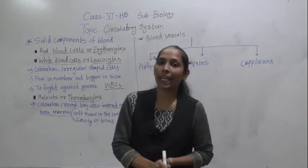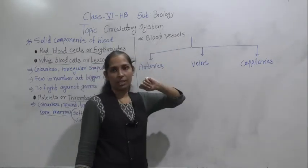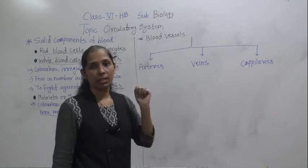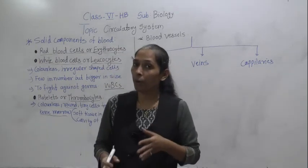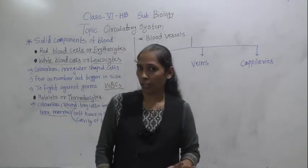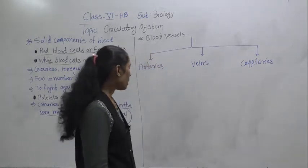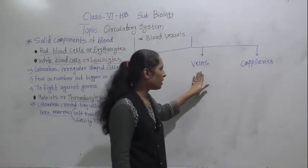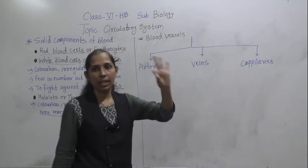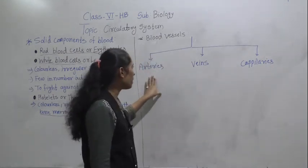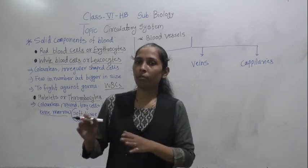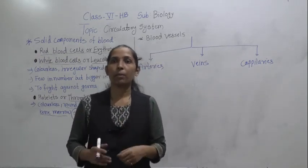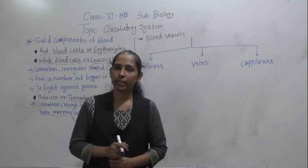Now we will move to the next topic — blood vessels. Blood vessels are tube-like structures which help to transport blood throughout the body. There are three types of blood vessels: arteries, veins, and capillaries. We will discuss each of these in detail in our next video. Thank you and goodbye.